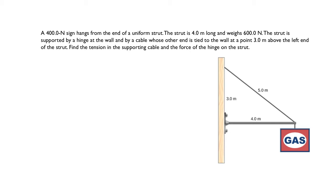So what we have is a 400 Newton sign hanging from the end of a strut, which is just another name for a rod. And you could see there's a hinge at the leftmost side of the rod right over here. And the strut is four meters long, weighs 600 Newton. So it actually itself has mass and it's supported by a hinge at the wall. And it's also supported by a cable that goes from the end of the strut to the top of the wall.